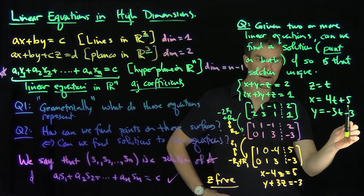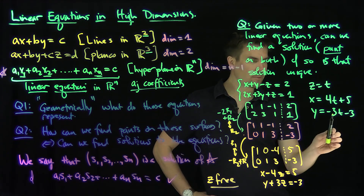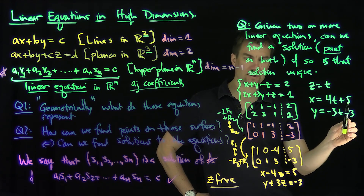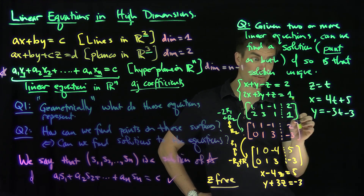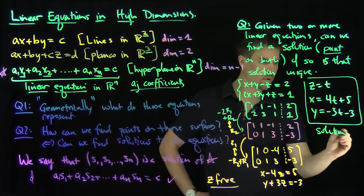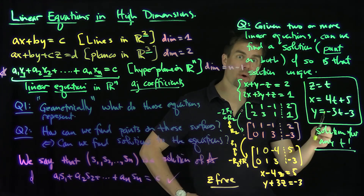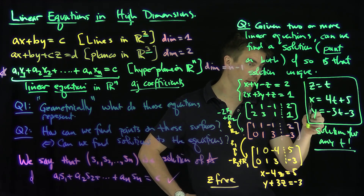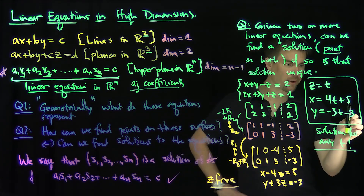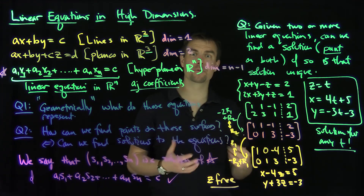We can verify this works: x plus y minus z gives t plus 2, and minus z gives 2 — the first equation is satisfied. For the second equation, 2x gives 8t, 3y gives negative 9t, plus z cancels the t; constant terms give 10 minus 9 equals 1 — satisfied. So for any value of t, this is a solution. For those who have seen multivariable calculus, this is the parametric equation of a line — going through the point (5, negative 3, 0) with direction vector (4, negative 3, 1). We'll flush that out in future videos. Thank you very much.